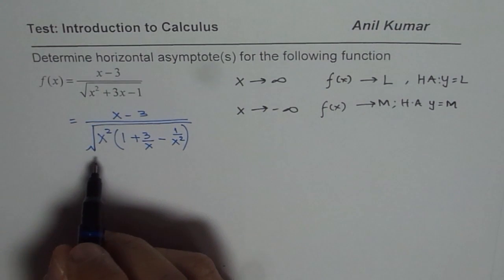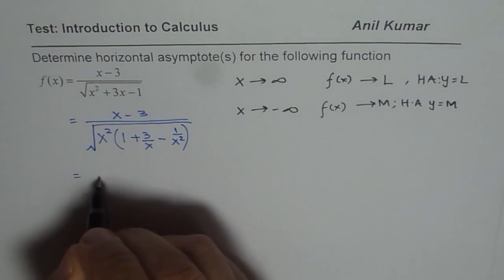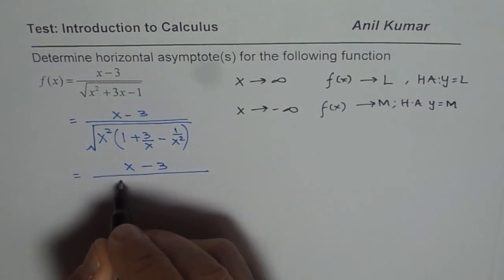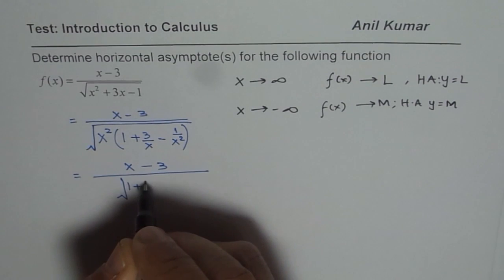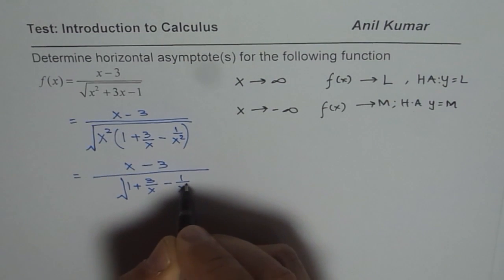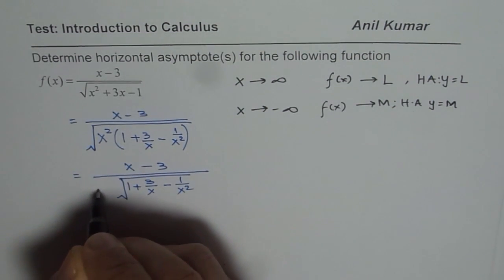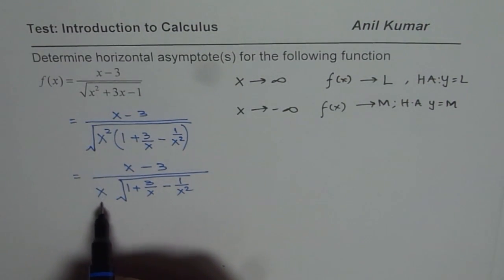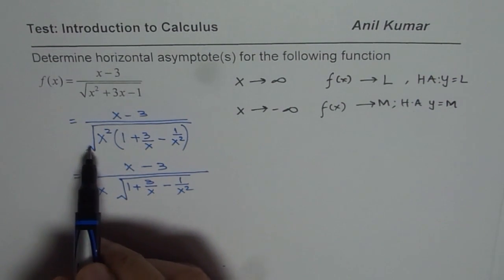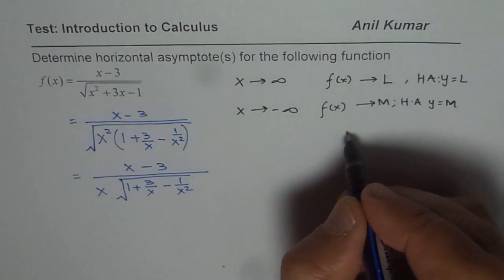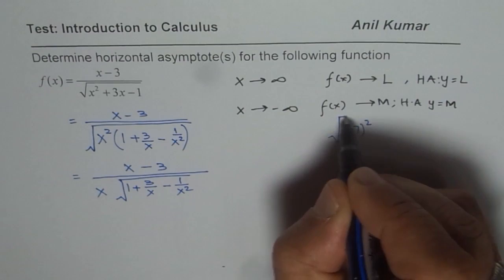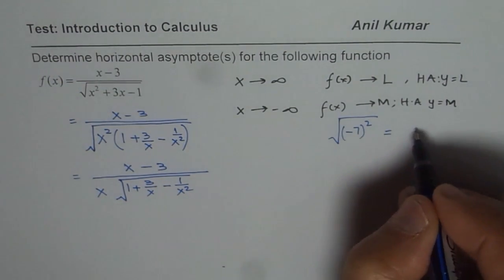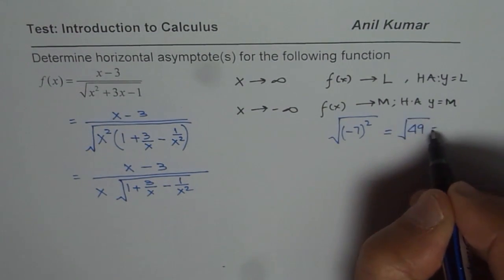Now let's take x squared outside the square root. Outside the square root, do we simply get x? The answer is no — those who say x are wrong. The radical is always positive; the square root is always positive. For example, the square root of negative 7 squared equals the square root of 49, which equals 7, not negative 7. So what we get outside is the absolute value of x.